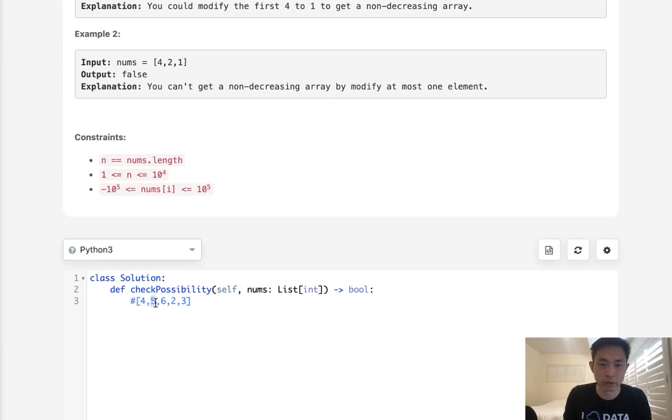Is this number greater than or equal to the max that we have so far? And if it is, then it's fine, we just skip. Now, as soon as we find that it's not greater than or equal to the max that we have so far, which is 6, then we're going to increment our counter.